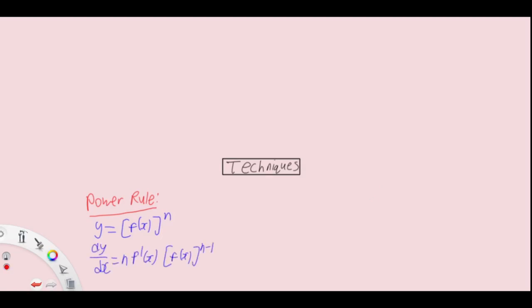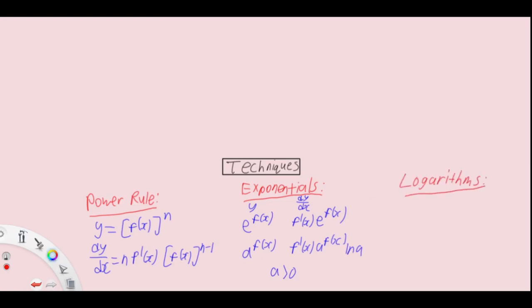Next, exponentials where we have two types: y equals e to the power of fx and a to the power of fx. The derivative is simply f prime x times e to the power of fx, and similar for a to the power of fx, just that it times ln a where a is bigger than zero.